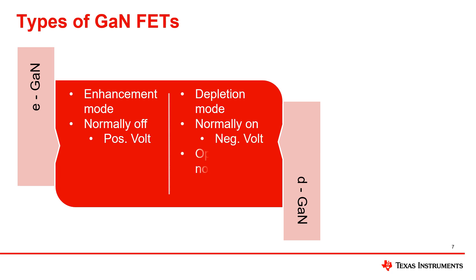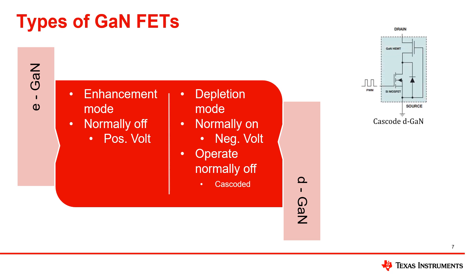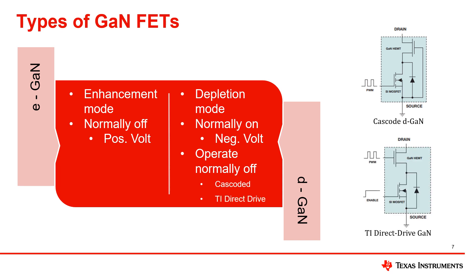To allow normally off operation of a depletion mode GaN HEMT, it can be packaged in cascode with a low voltage silicon switch. Here, the GaNFET is turned on and off by switching the silicon FET on and off in every cycle. TI's solution is to simply have the GaNFET driven directly, where the silicon switch is used as an enable switch at startup, so the silicon switch does not switch in every cycle — only the GaN switch does.